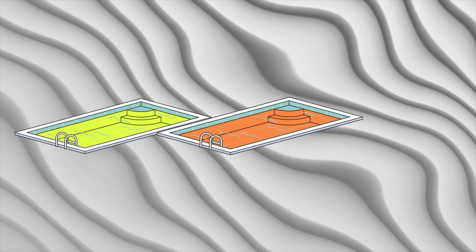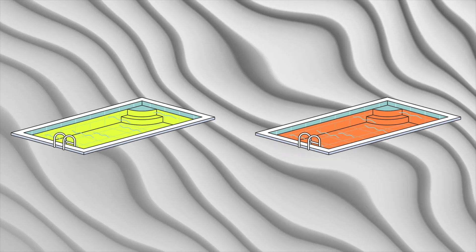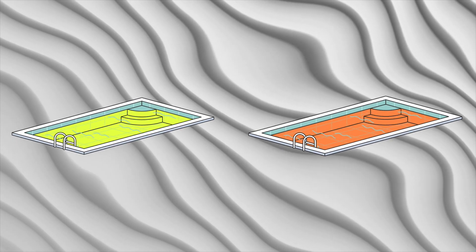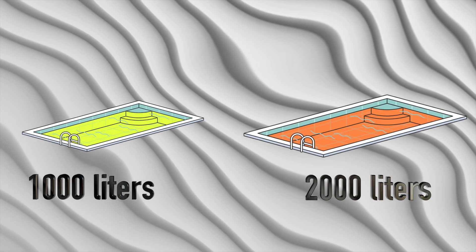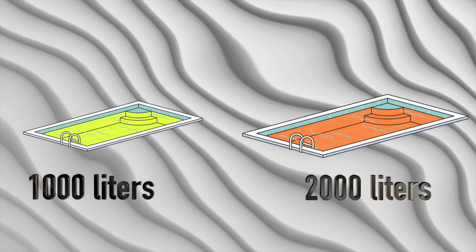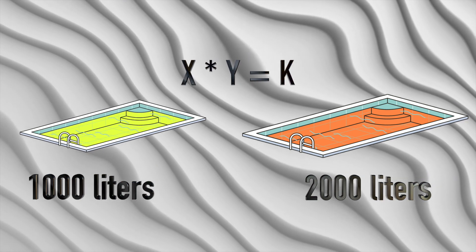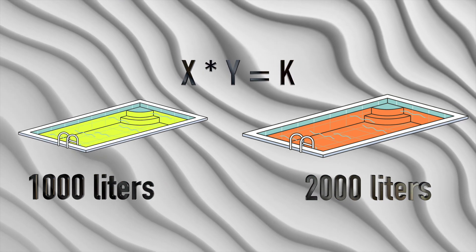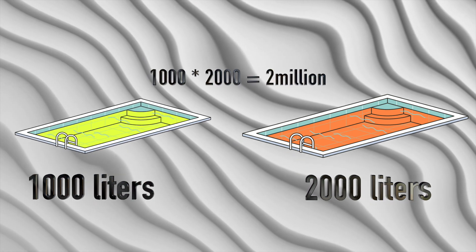You can imagine a liquidity pool as two swimming pools filled with juice. Let's say one is filled with apple juice, and one is filled with orange juice. Let's say that in the beginning, you have started with 1,000 liters of apple juice, and 2,000 liters of orange juice. So to come up with a price, you use a fixed constant ratio formula, x by y equal k, where k is a constant. In our example, that would be 1,000 multiplied by 2,000, giving constant k a value of 2 million.